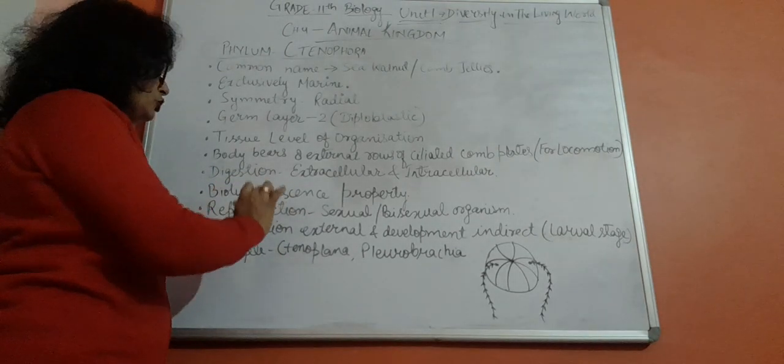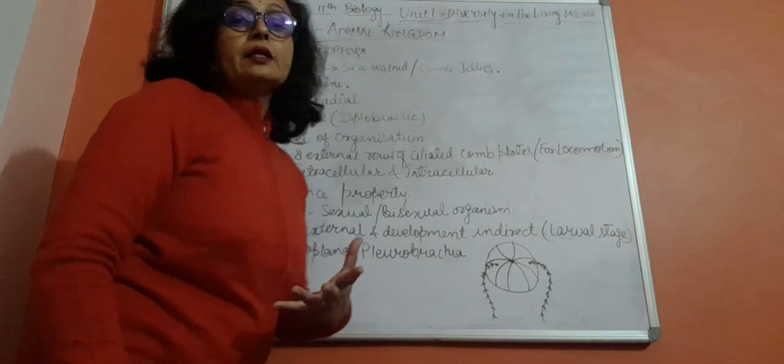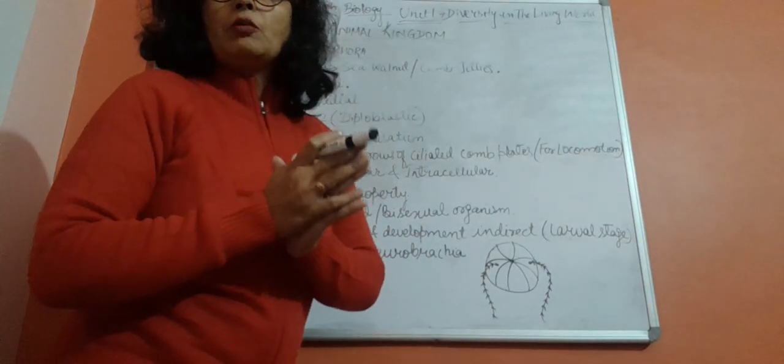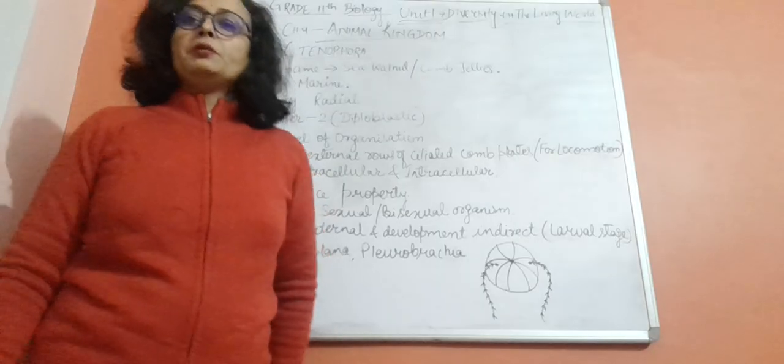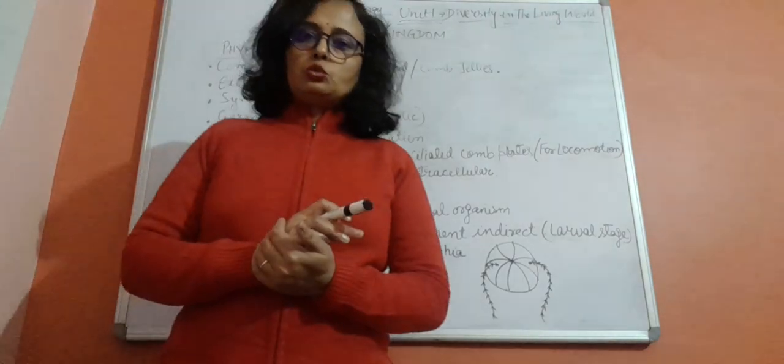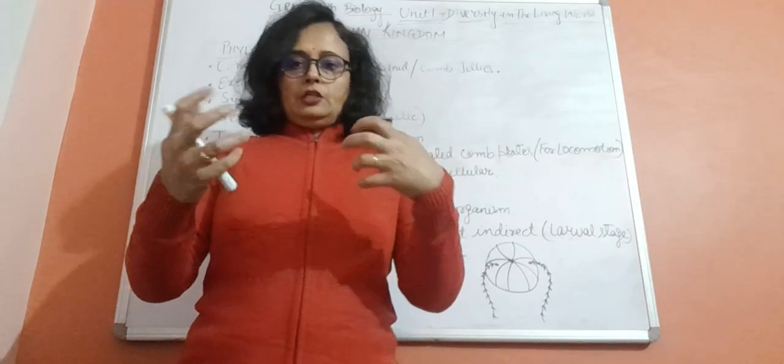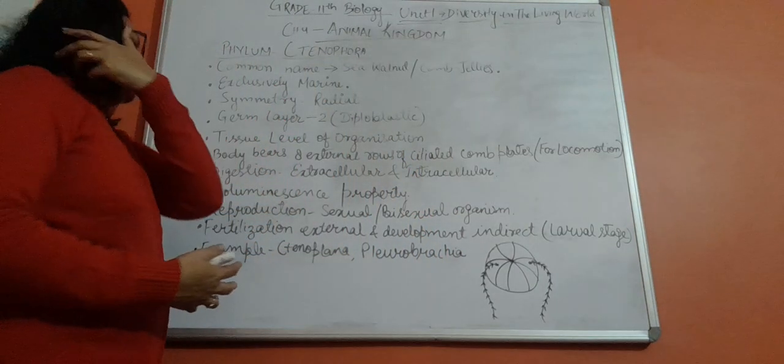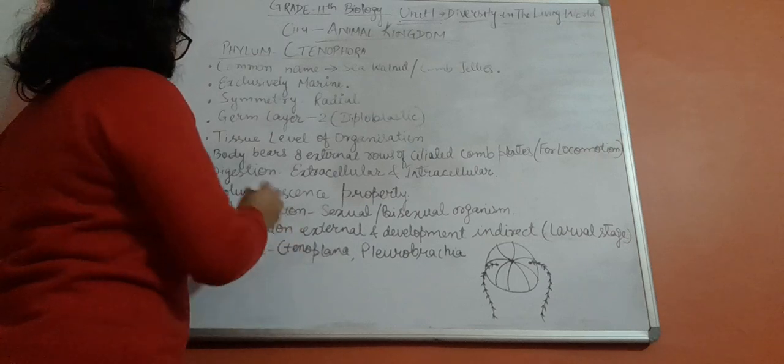Next is bioluminescence property. These organisms, ctenophores, have the property of bioluminescence, which means having the ability to emit light from their body.